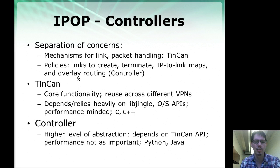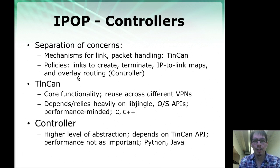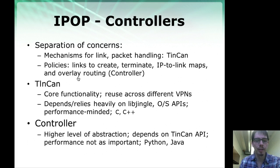Tincan provides the core functionality needed for any VPN to tunnel IP traffic over P2P links. It relies heavily on libjingle and OS APIs, and is performance-minded, implemented in C++ with C for low-level tap device bindings. The controller can be implemented in a higher-level language — our implementations typically use Python, but it can use any programming language of your choice. All you need to worry about is the API that talks to Tincan, and we're going to begin to explore that API today.